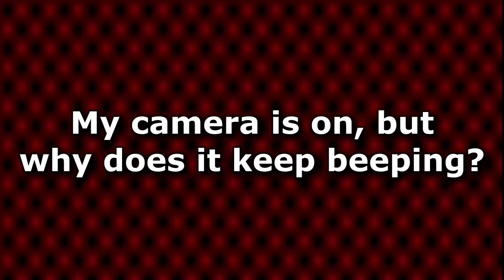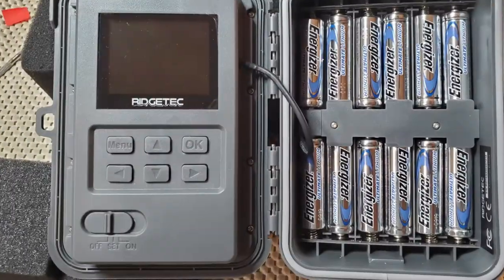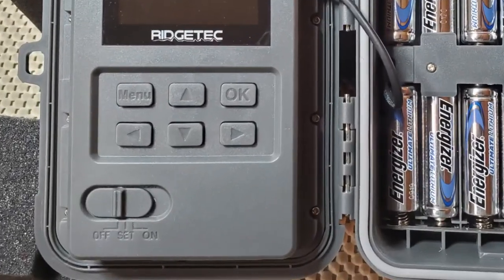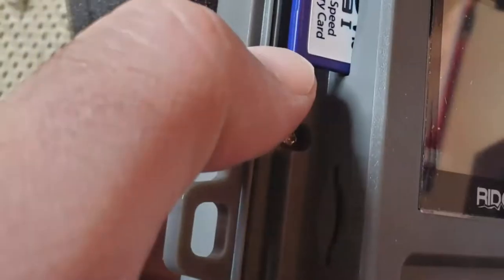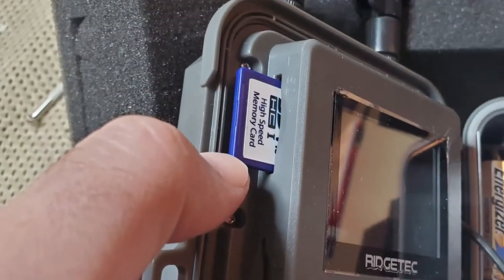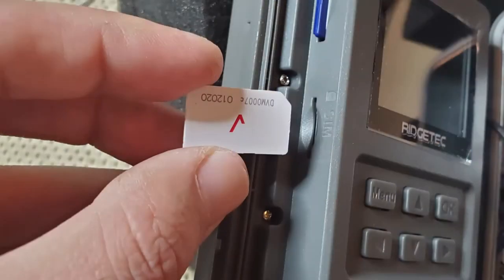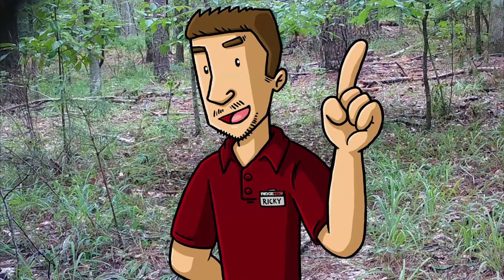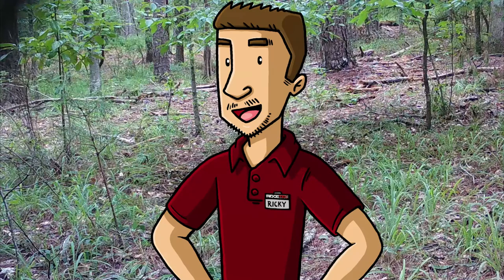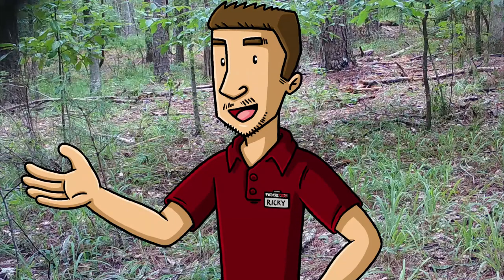My camera is on, but why does it keep beeping? Power cycle your camera by turning it off and switching to set. You may have forgotten to insert your SD card, or your SIM may have an issue. If this is the case, you'll see an error message on the LCD screen. Try another SD card or SIM card, power cycle, and try again.